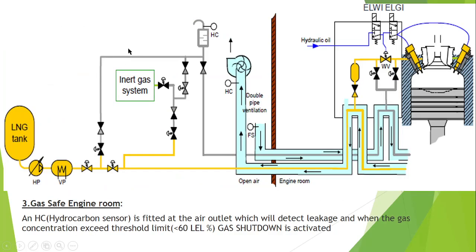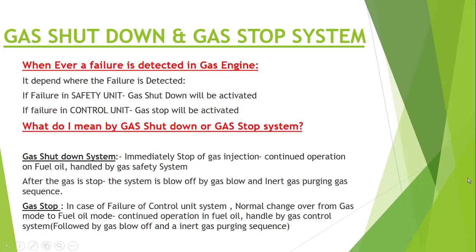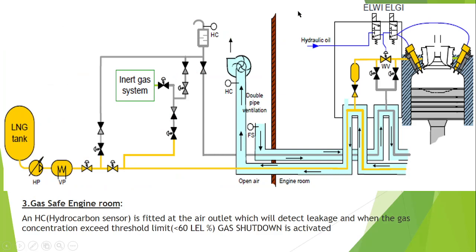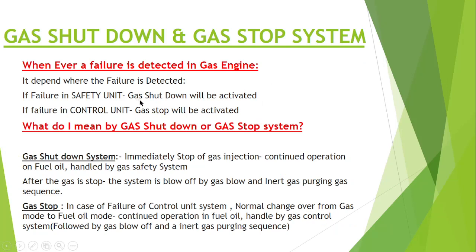Gas shutdown and gas stop are two different things. Whenever a failure is detected in a gas engine, it depends on where the failure is detected. If the failure is in the safety unit — for example, a failure of the ELGI which is controlled by a safety unit — then gas shutdown will be activated. But if it is a failure of a control unit, there will be a gas stop.